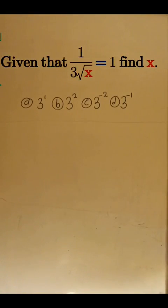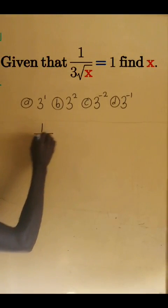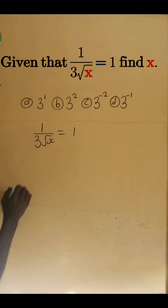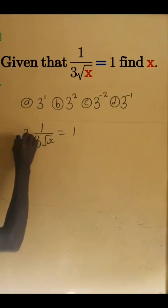Given that 1 divided by 3 times the square root of x equals 1, find x. Here we have 1 divided by 3 times square root of x equal to 1. So if we multiply each side by 3, we're going to have...